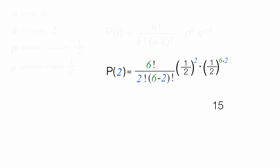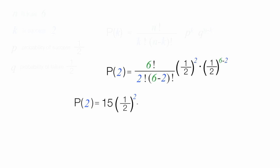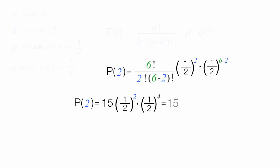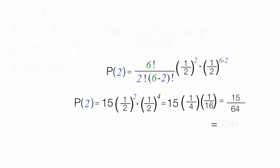Now I'll work on the rest of the equation. The probability of two is equal to 15 times one-half squared, times one-half to the fourth power — since six minus two is four. This equals 15 times one over four, times one over 16, which equals 15 divided by 64.